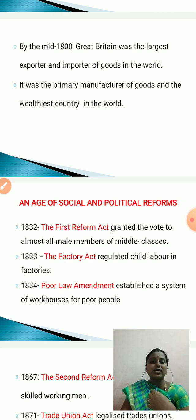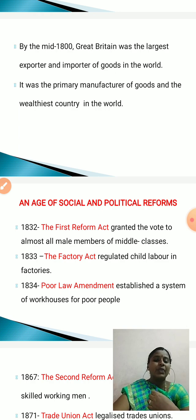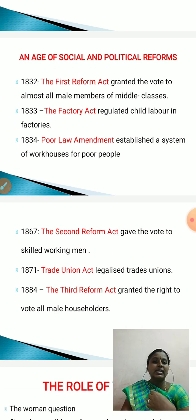In 1832, the First Reform Act granted the vote to almost all male members of the middle classes. In 1833, the Factory Act regulated child labour in factories. In 1834, the Poor Law Amendment established a system of workhouses for poor people. In 1867, the Second Reform Act gave the vote to skilled working men.